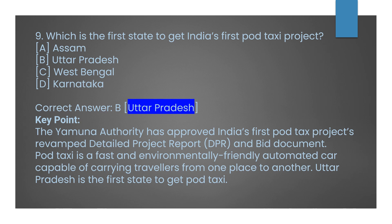Question number nine: which is the first state to get India's first Pod Taxi project? Option A: Assam. Option B: Uttar Pradesh. Option C: West Bengal. Option D: Karnataka. The correct answer is Option B, Uttar Pradesh. The Yamuna Authority has approved India's first-ever Pod Taxi project's revamped detail project report and bid documents. A Pod Taxi is a fast, environmentally friendly automated car capable of carrying travellers from one place to another. Uttar Pradesh has become the very first state to get the Pod Taxi system launched.